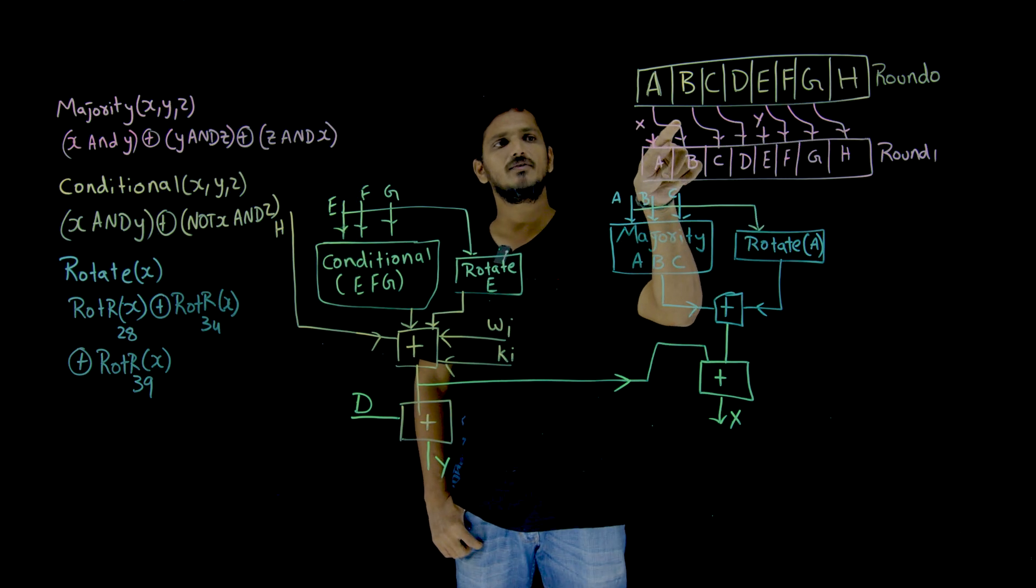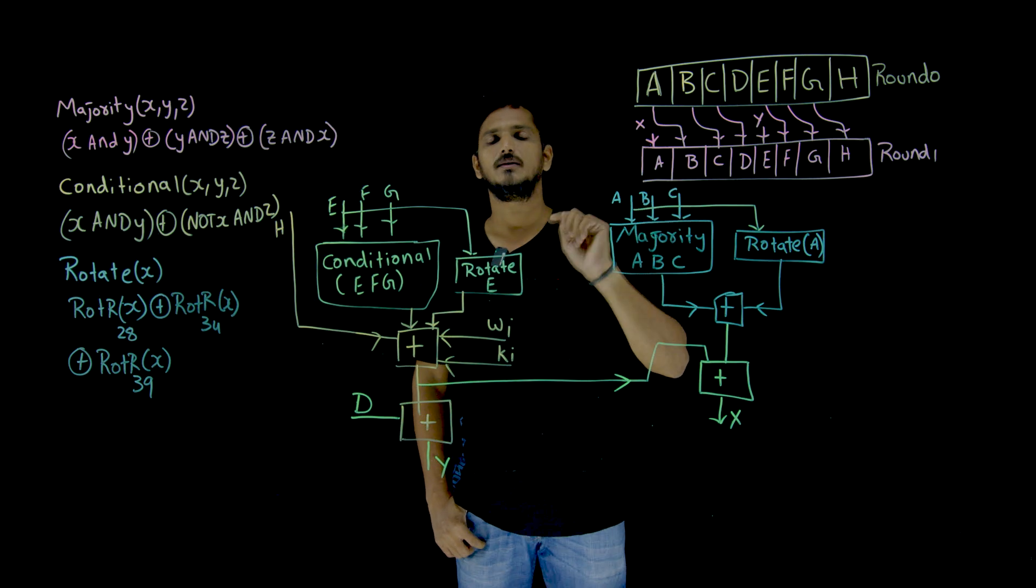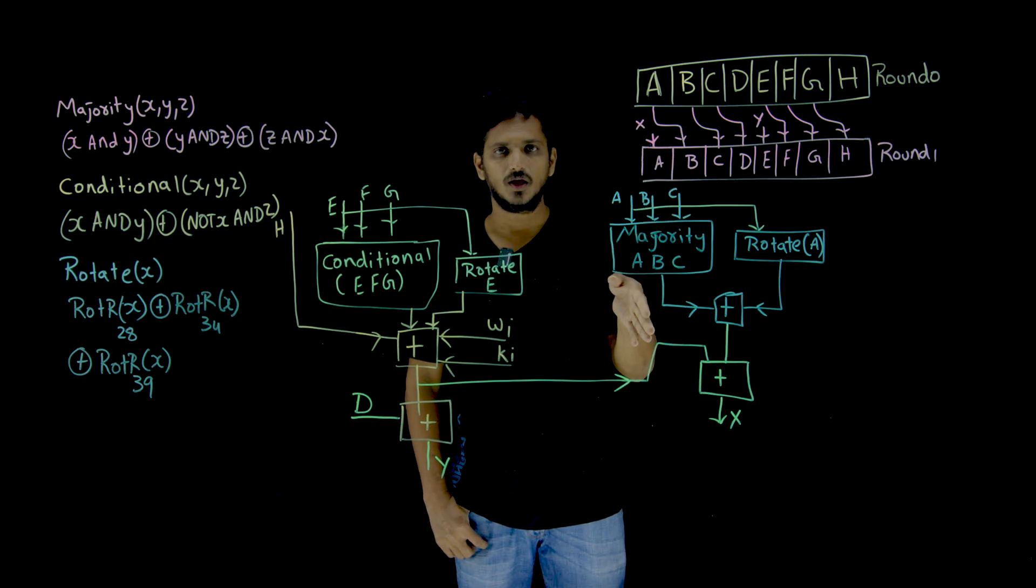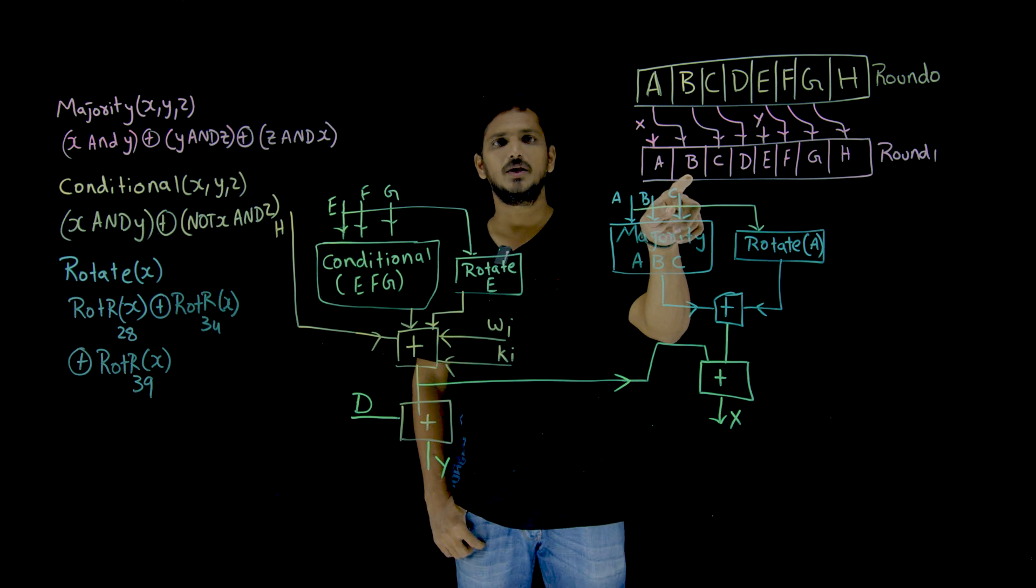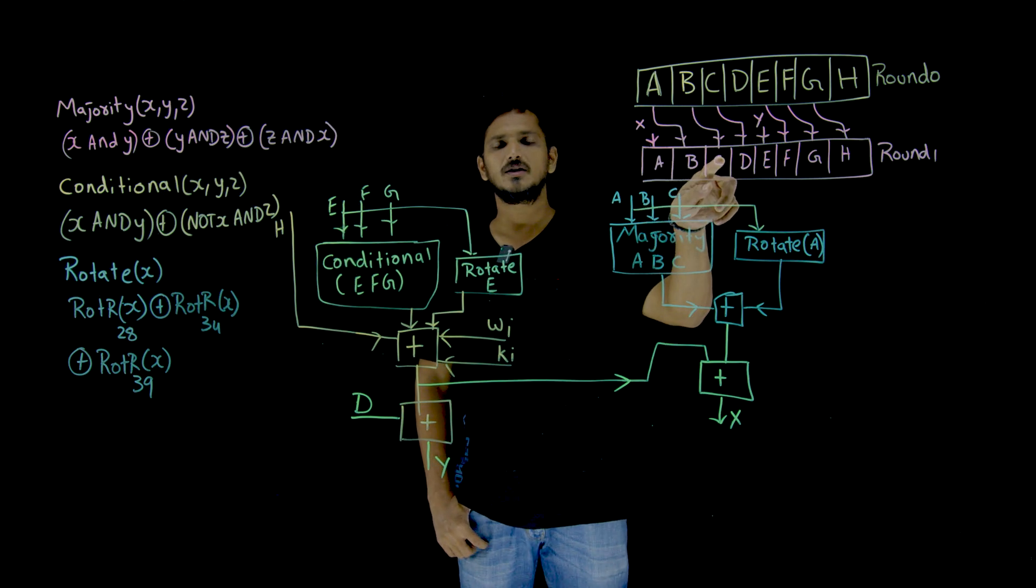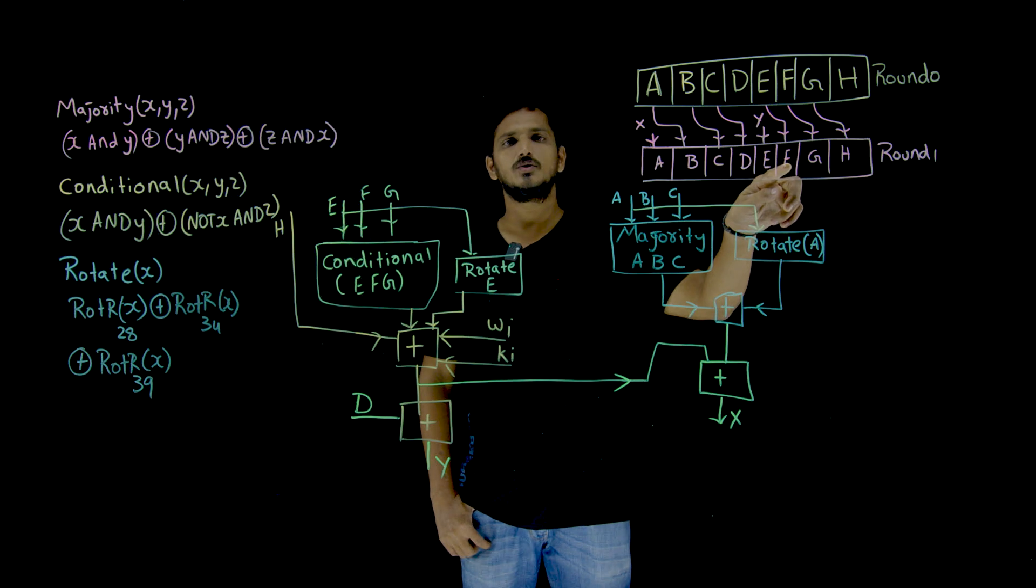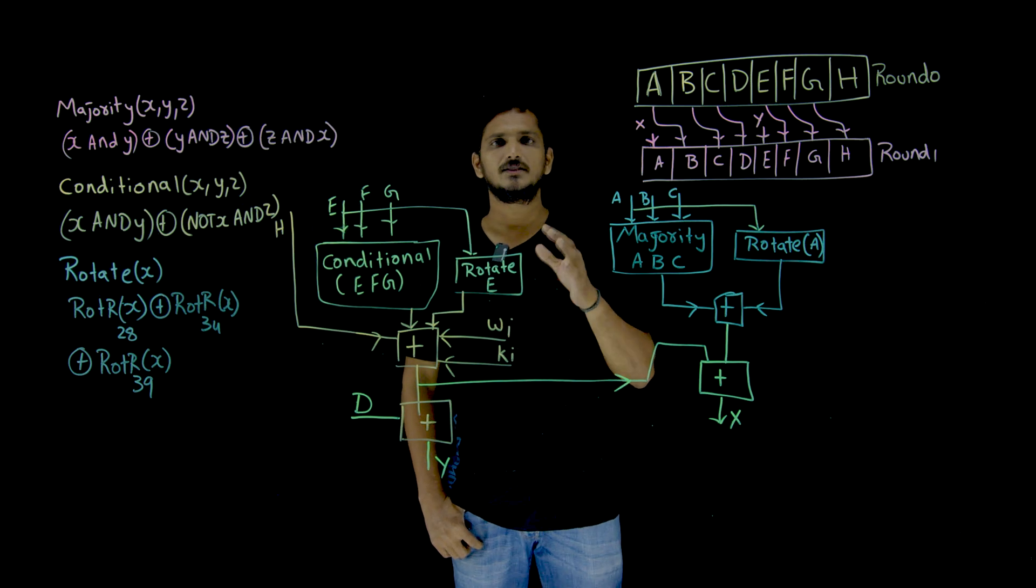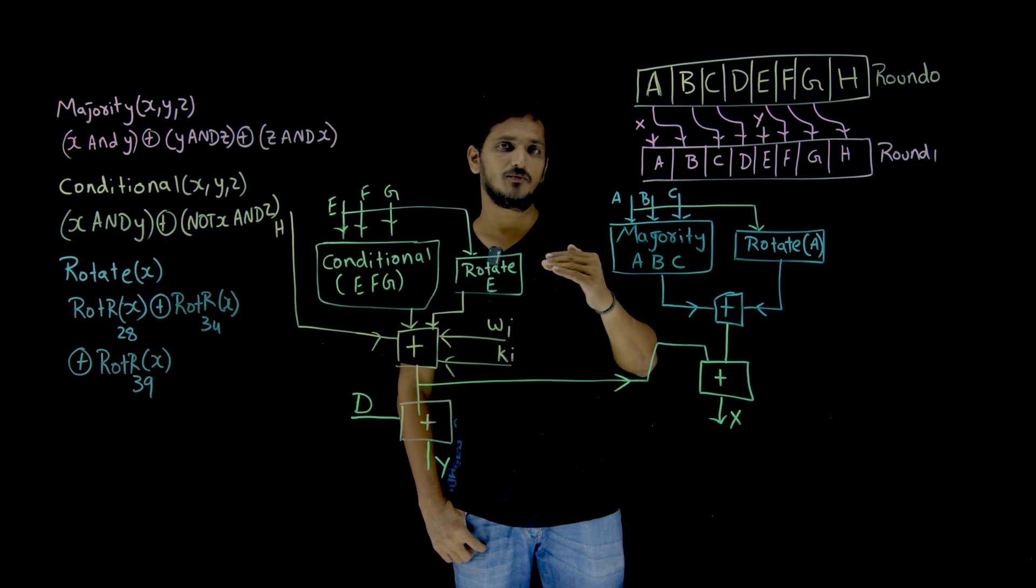This A is given as input to the next round for B. A is directly sent as input to next round, placed here at B. Similarly, B is sent directly to C, C is sent directly to D, E is sent directly to F, F is sent directly to G, G is sent directly to H. This is how the next round inputs come from.